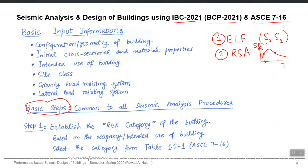The code equation simply uses Ss and S1 and can give you the complete response spectrum curve — you just input those two points and it constructs the full curve.